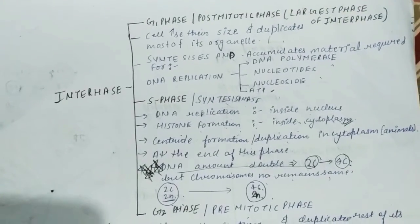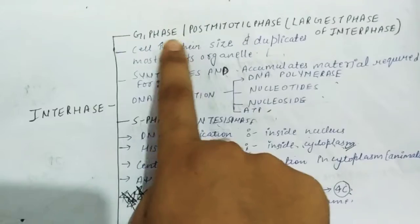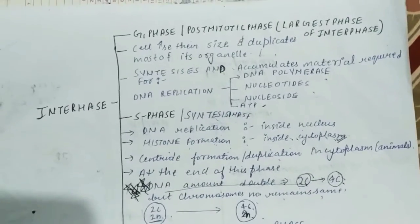Interphase also divides into three parts: G1 phase, S phase, and G2 phase. G1 is the first gap phase, G2 is the second gap phase, and S phase is synthesis phase. So what happens in these phases?